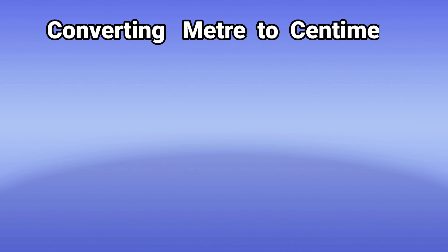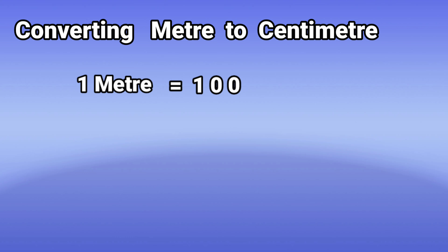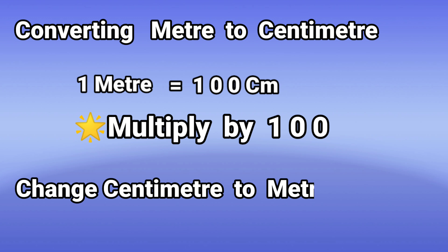Now let us see converting meter to centimeter. One meter is equal to how many centimeters? One hundred centimeters. To change meters to centimeters, multiply by one hundred. To change centimeters to meters, divide by one hundred.